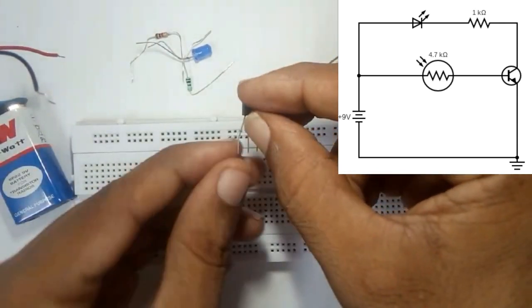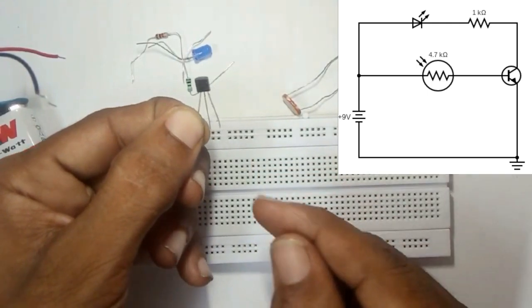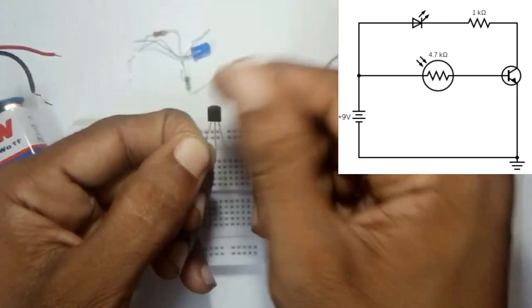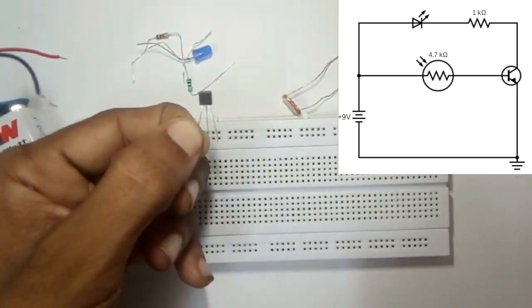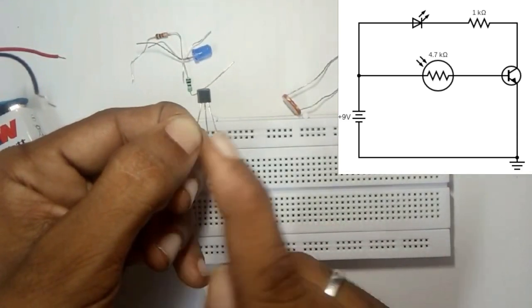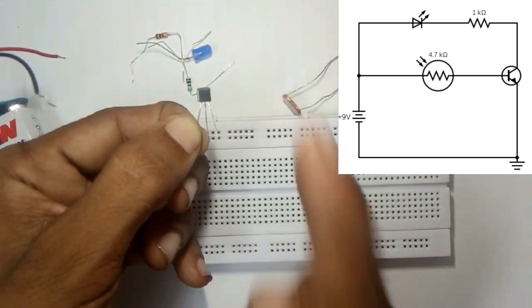Just reminding you that when I hold the transistor to my left hand and this flat surface is facing to my face, this is collector, center is the base, and this last one is the emitter.